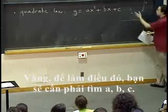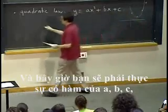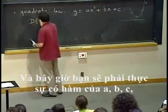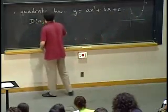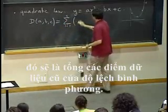Well, to do that you would need to find a, b, and c. And now you would have actually a function of a, b, and c, which would be the sum of all data points of the squared deviation.